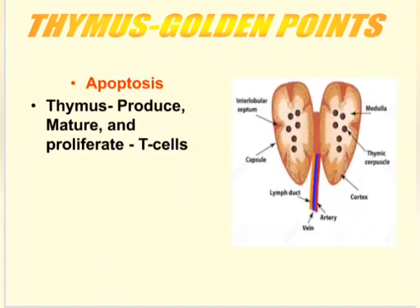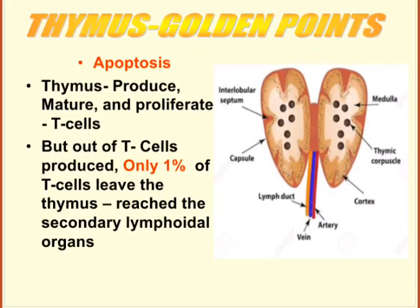Apoptosis process of the thymus. The thymus gland is responsible for the maturation of T-lymphocytes, proliferation of T-lymphocytes, and also provides training to T-lymphocytes for the production of cell-mediated immunity. Out of all trained T-cells, only 1% of T-lymphocytes leave the thymus and reach the secondary lymphoid organs. To better understand this, we can compare the function of the thymus and T-lymphocytes with the Indian army.